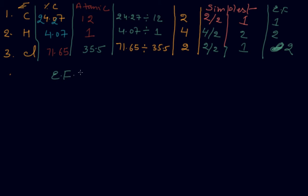The empirical formula comes out to be CH₂Cl — carbon is 1, hydrogen is 2, and chlorine is 1. Now in this problem, the molecular mass of 98.96 has been given.